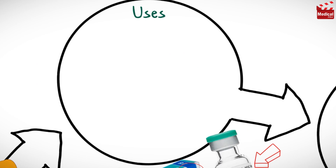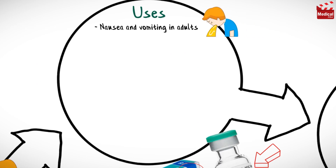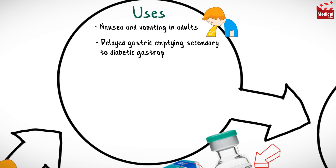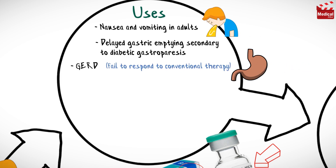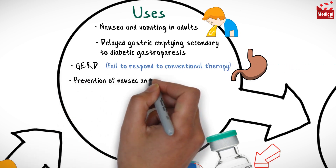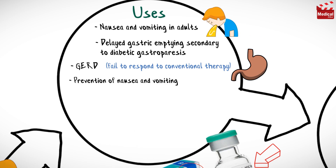Metoclopramide is used in the symptomatic treatment of nausea and vomiting in adults, relief of symptoms associated with acute and recurrent diabetic gastroparesis, and short-term therapy of symptomatic documented gastroesophageal reflux disease in adults who fail to respond to conventional therapy.